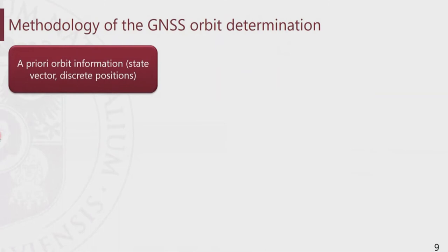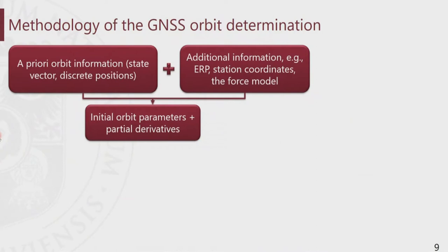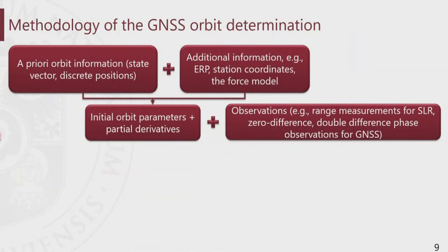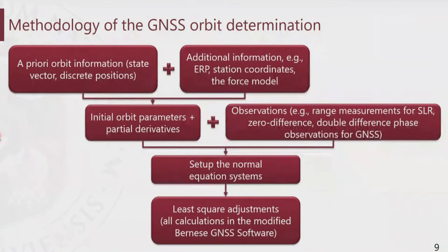In order to determine any GNSS orbit, we first need a priori information — either a state vector or a set of discrete satellite positions. We also need to supplement these with the force model acting on the satellite, as well as Earth rotation parameters and station coordinates for the adjustment. These give us the set of initial orbit parameters together with partial derivatives. For observations, for SLR we can use direct range measurements, and for GNSS we can use either code or phase observations — for instance, zero-difference or double-difference phase observations. By combining these two, we obtain a normal equation system, which is then adjusted using least-squares methods. All calculations in this study are done in the modified Bernese GNSS software.